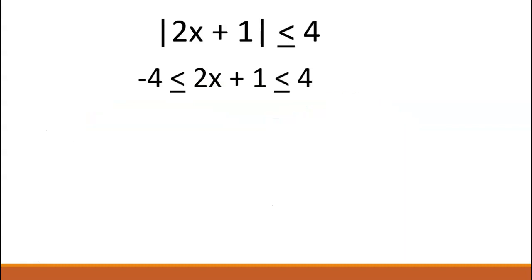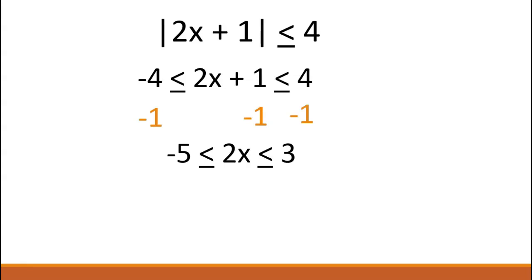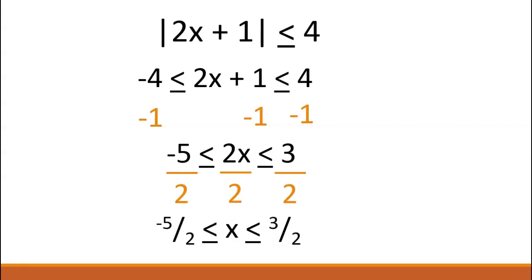Once we have written the expression in the absolute value as an 'and' statement — in this case 2x plus 1 — we just need to finish solving the inequality. We subtract 1 from both sides and the middle, then divide both sides and the middle by 2. This means negative five halves is less than or equal to x is less than or equal to three halves.